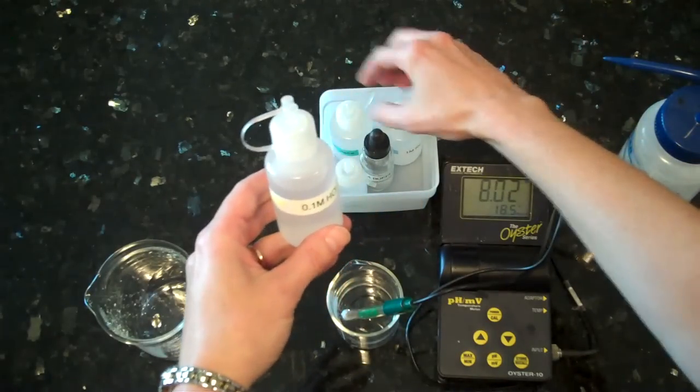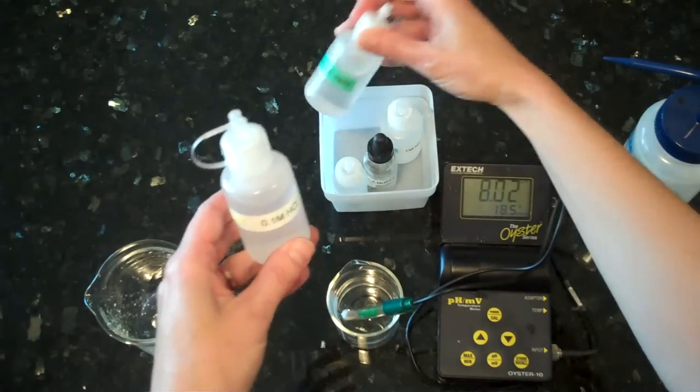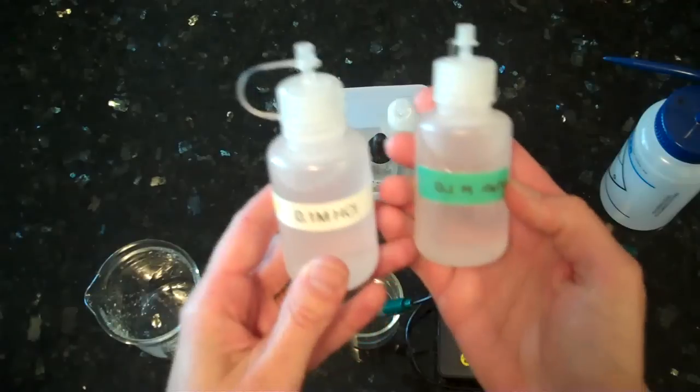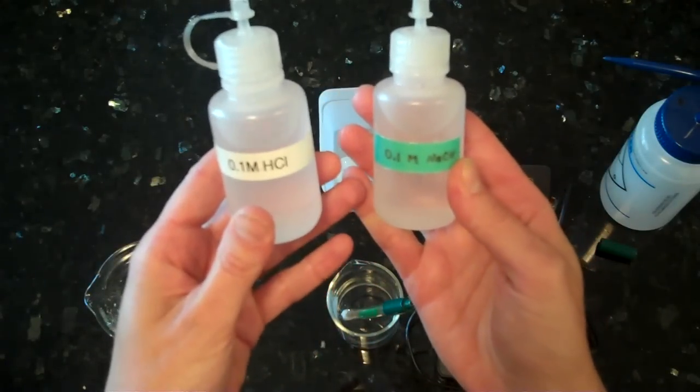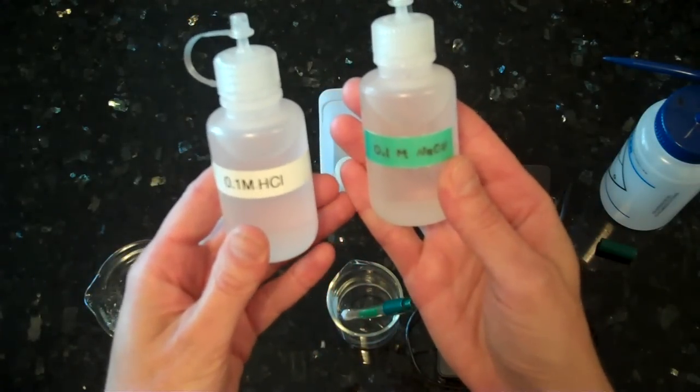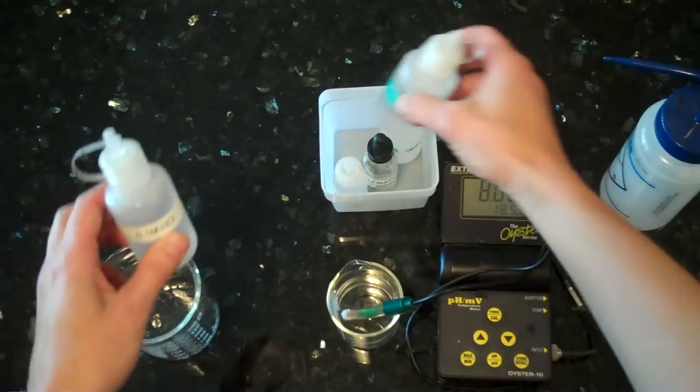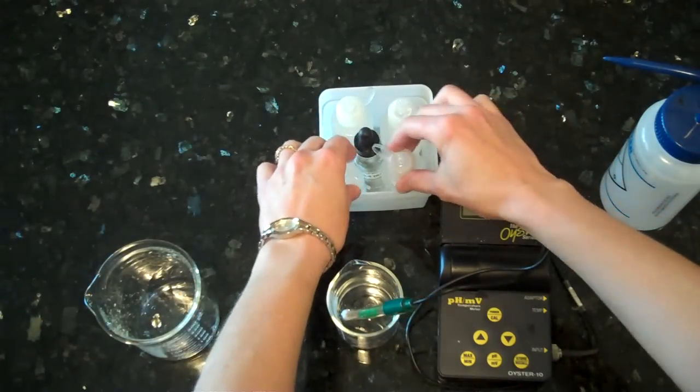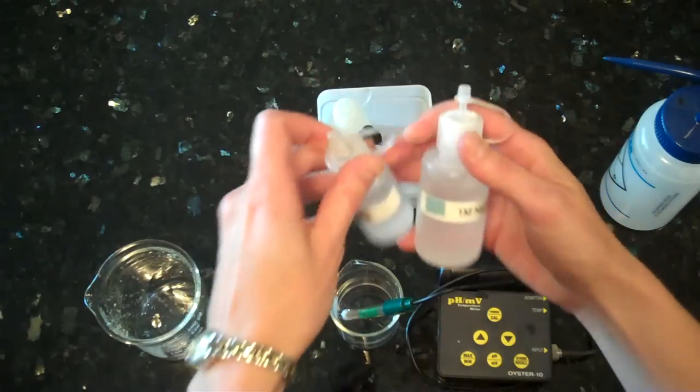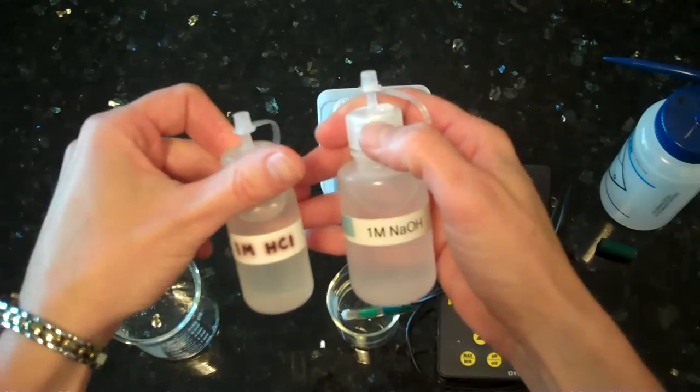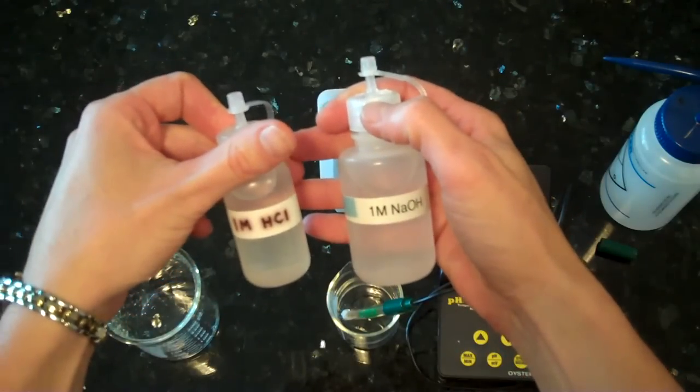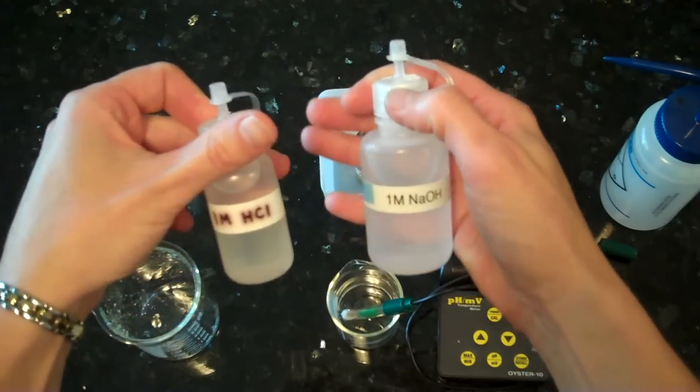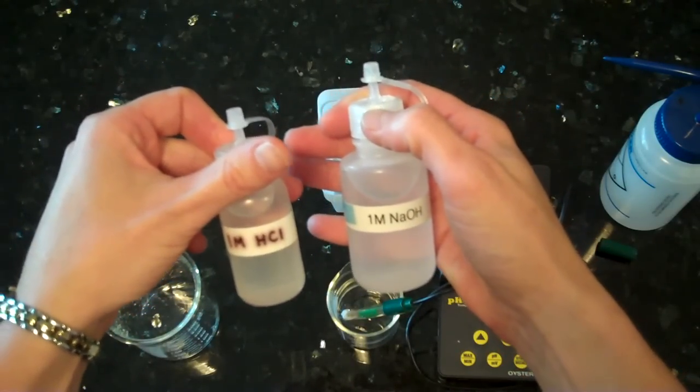I'm going to show you two concentrations. These are the lower concentrations of the acid and base: 0.1 molar HCl and 0.1 molar NaOH. If you want to do a more rapid change of the pH, the more concentrated forms are 1 molar HCl, which is the acid, and 1 molar NaOH, which is the base.